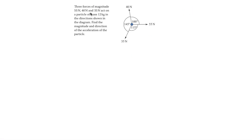The next question: three forces of magnitude 55 newtons, 40 newtons, and 35 newtons act on a particle of mass 12 kg in the directions shown in the diagram. We need to find the magnitude and direction of the acceleration of the particle. Let's split this up and resolve because we have three different forces acting upon it.